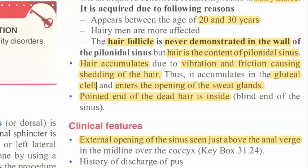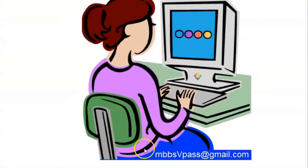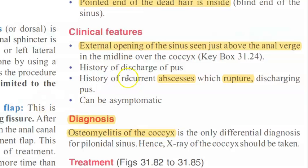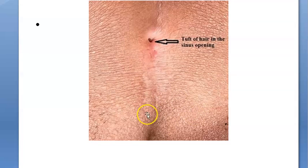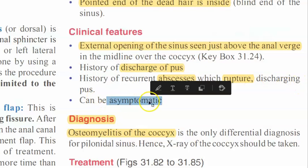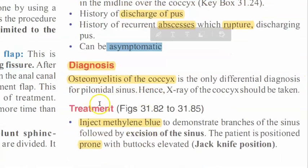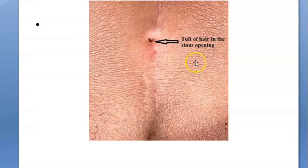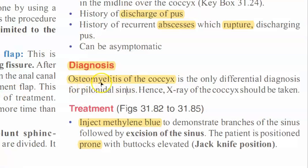Clinical features: there is an external opening of the sinus just above the anal verge. The patient gives a history of discharge of pus from there, and there is recurrent abscess with rupture discharging pus - though sometimes they can be asymptomatic. The differential diagnosis to not get confused with is osteomyelitis of the coccyx, which can also discharge via a sinus with pus, so an X-ray of the coccyx should be taken to rule out osteomyelitis.